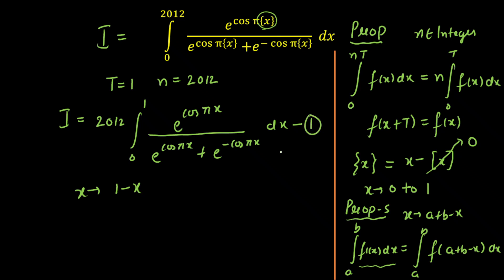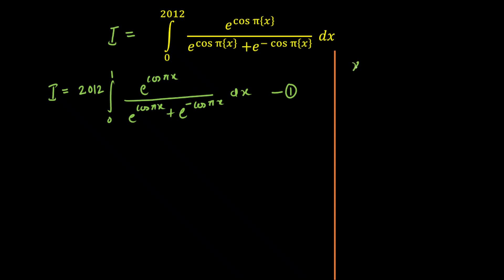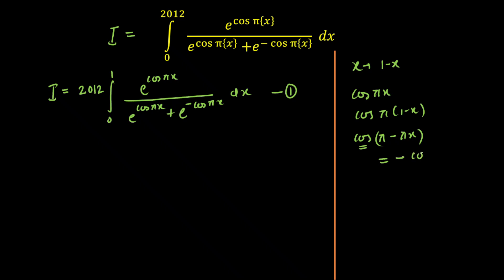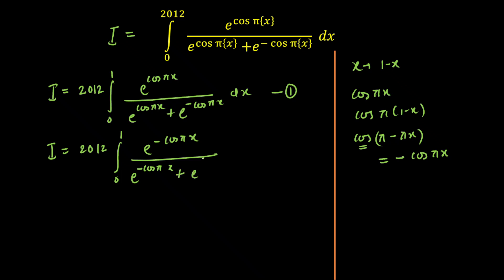Let's say this is our first equation. In equation 1, I am going to change x by 1 minus x — that is the King's property — and the value of the integral will remain the same. I will see changes in cos(πx): it becomes cos(π(1−x)) = cos(π − πx). Since we are landing in the second quadrant, there will be a negative sign, so cos(πx) changes to minus cos(πx). So the second equation is: 2012 times integration from 0 to 1 of e raised to power minus cos(πx), divided by e raised to power minus cos(πx) plus e raised to power plus cos(πx), dx.